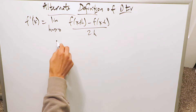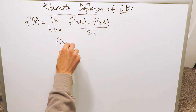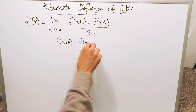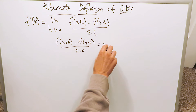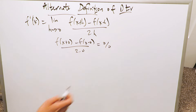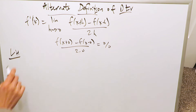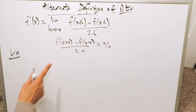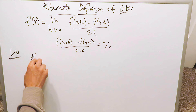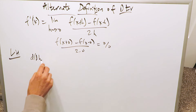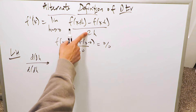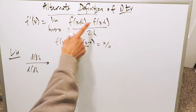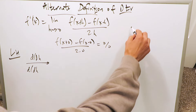Limit as h approaches 0 — analyze this. If you put 0s in place of h, you'd have f of x plus 0 minus f of x minus 0 divided by 2 times 0. Same minus same gives you 0 divided by 0, an indeterminate limit form. So now you can think about applying L'Hôpital's rule to analyze this derivative, and you can. You would take the derivative with respect to h in the numerator and the derivative with respect to h of the denominator. The denominator is easy, but in the numerator you have composite functions.